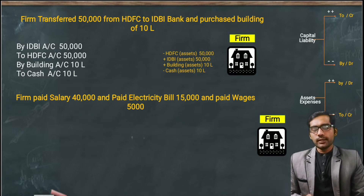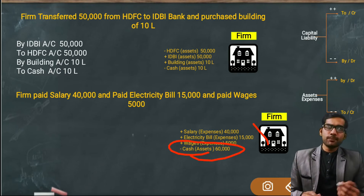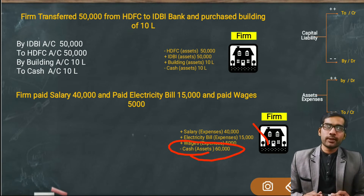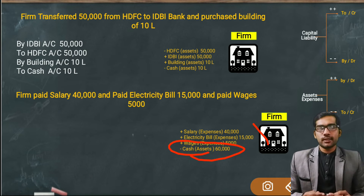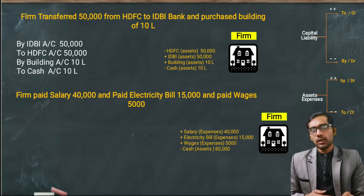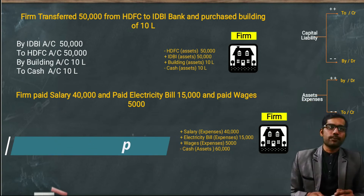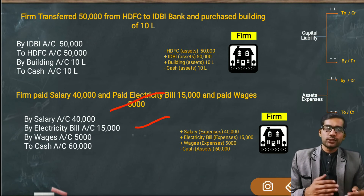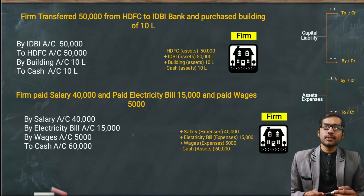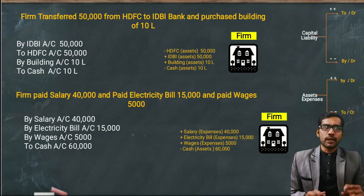Following the same procedure, for expenses the entry remains the same. Total 60,000 rupees cash was paid and in exchange three expenses were increased. Expenses come under debit (Dr): Dr Salary Account, Dr Electricity Bill Account, Dr Wages Account, and Cr Cash 60,000 total. These were our general entries covering assets, liabilities, and bank transactions. Today's class ends here; we'll meet again tomorrow with a new topic. Take care and keep doing accounting. Bye bye!